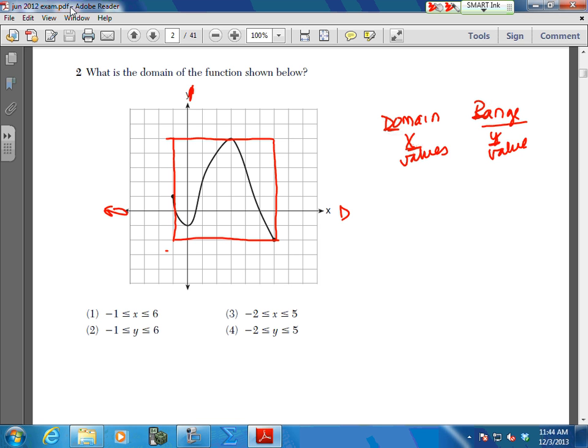You want the domain. You want from negative 1 to positive 6. And you've got negative 1, positive 6 in choices 1 and 3. Notice 3 and 4 use the range, and in 1 and 2, one used an x, one used a y. You want the x squared. And you want to make sure, because your endpoints are closed, that you use the equal sign as well.